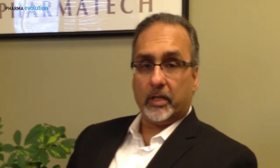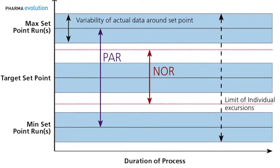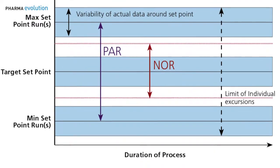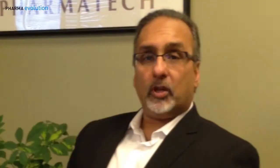One definition which we've used very successfully with the agency and with other processes that have been in development, has been to look at whether these parameters, across our final proven acceptable range and normal operating range, still have an impact on the product's performance. If they do, then we consider them critical process parameters, and we consider that a critical process within the overall drug manufacturing life cycle.